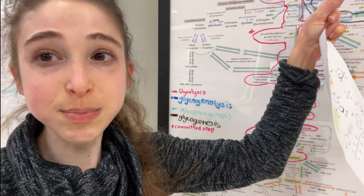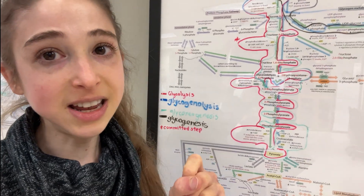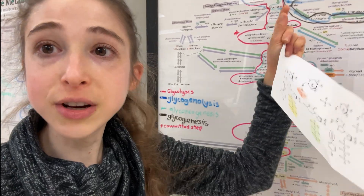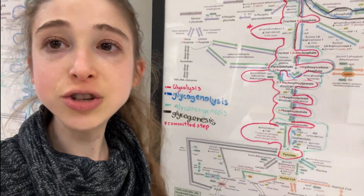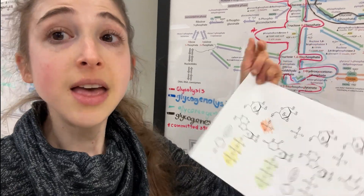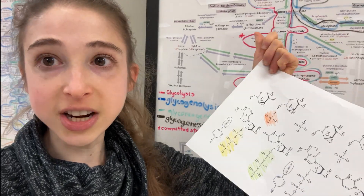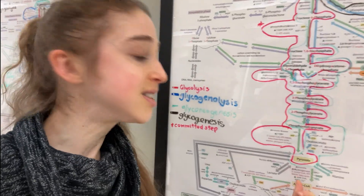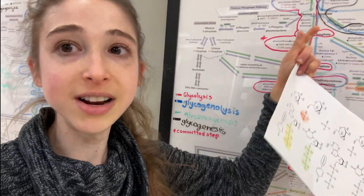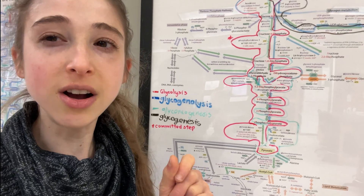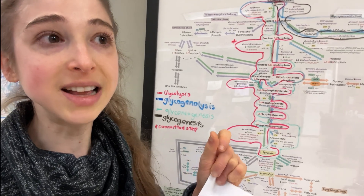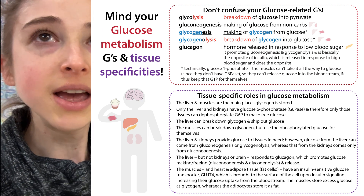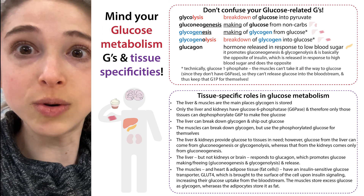Knowing that things like G6Pase are only in our liver and our kidney, not in our muscle. Our liver can not only free glucose that way, but it can also do gluconeogenesis and make it, as well as break it down from glycogen. Whereas our kidneys aren't storing glycogen, but they still have G6Pase and can still do gluconeogenesis and generate glucose that way.